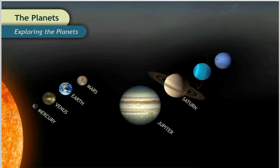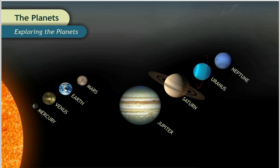The four outer planets, Jupiter, Saturn, Uranus, and Neptune, are called the gas giants because their surfaces are not solid.